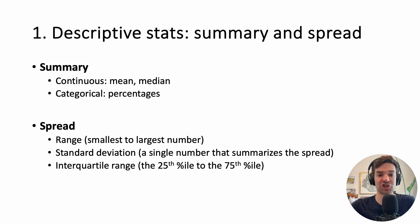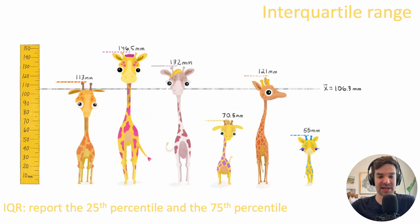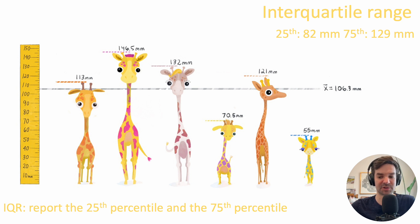In addition to standard deviation, you can report another type of range: rather than the full range, you can report the 25th to 75th percentile, known as the interquartile range (IQR). This is most often reported alongside the median. The IQR here is 82 to 129 millimeters. Fun fact: the median is also known as the 50th percentile.